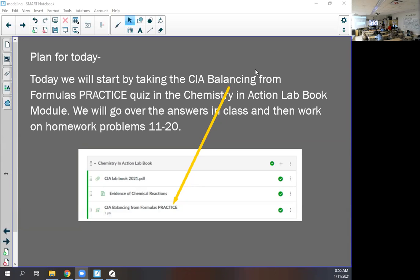Alright, so we're starting off with this quiz. Everyone's already taking it. The CIA balancing from formulas. If you're online, you can find that direct link in the daily plan, or you can find it in the chemistry and action lab book module. If I were you, I would write it down, balance it, and then input the coefficients.